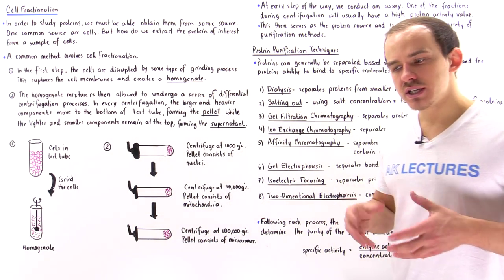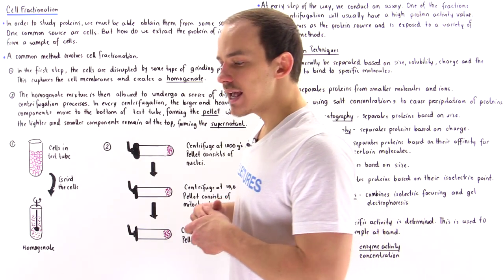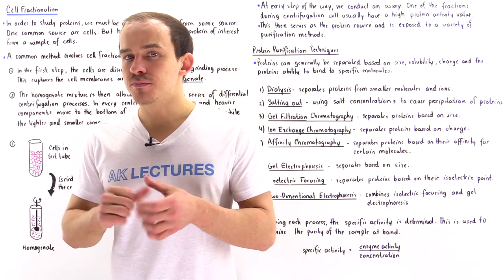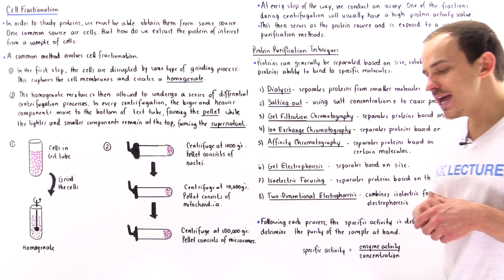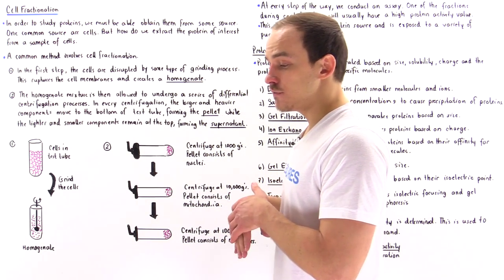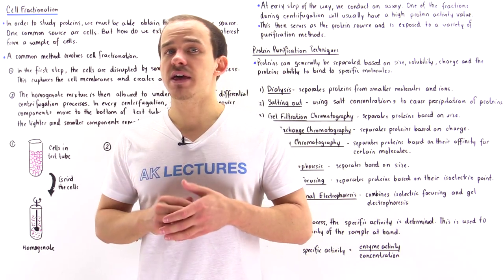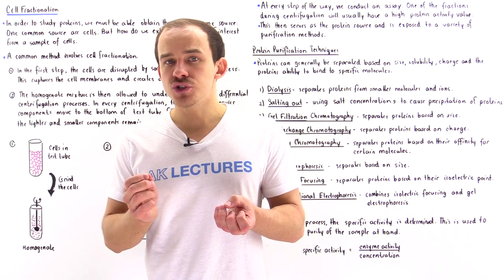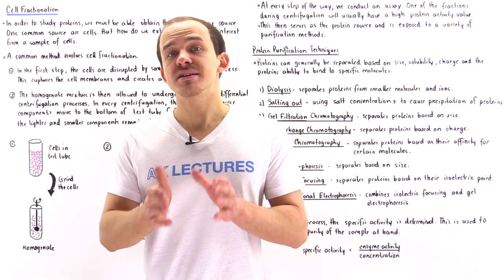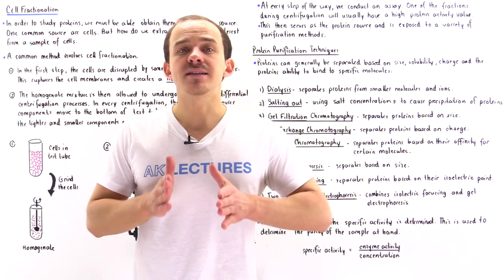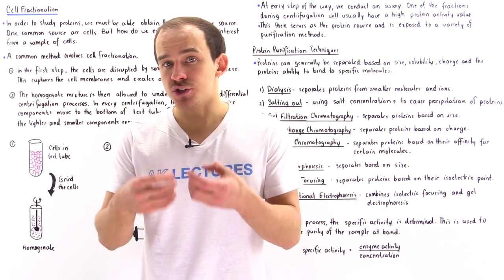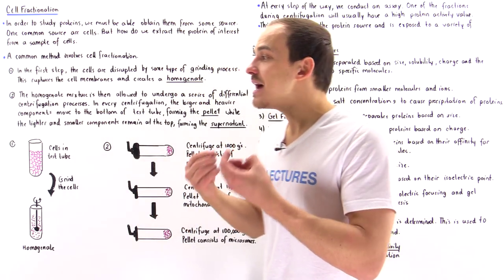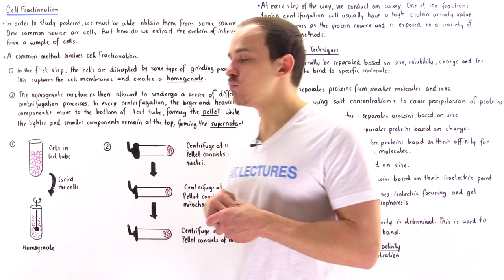Once we form the homogenate, we expose it to a process known as differential centrifugation, and we conduct several centrifugation processes. Differential centrifugation uses angular motion and centripetal acceleration to separate the components inside the homogenate based on their density. The more dense a component is, the lower along the test tube it will end up. The less dense it is, the higher up along the test tube it will actually be.